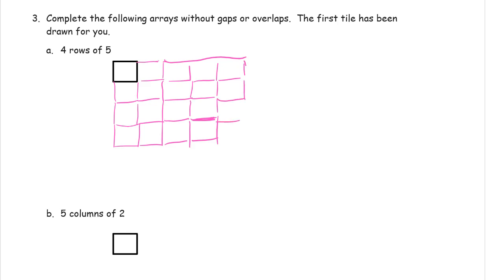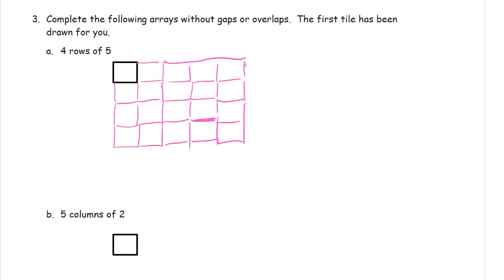Maybe you're like me, and you have a hard time drawing straight lines too. There's four rows of five, with no gaps or overlaps.